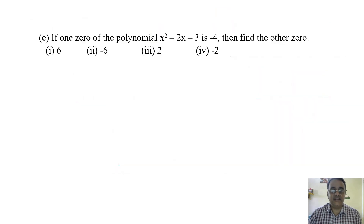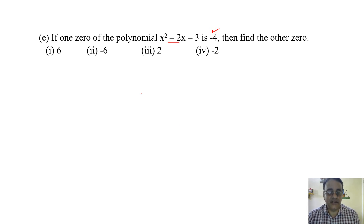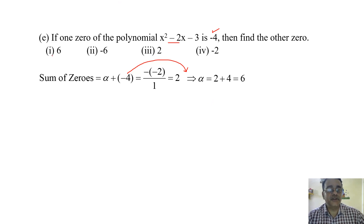If one zero of the polynomial x squared minus 2x minus 3 is minus 4, find the other zero. Let the other zero be alpha. So alpha plus minus 4 equals minus b by a, where b is minus 2 and a is 1. That gives 2. Shifting minus 4: 2 plus 4 equals 6. So alpha is 6, and the correct option is the first option.